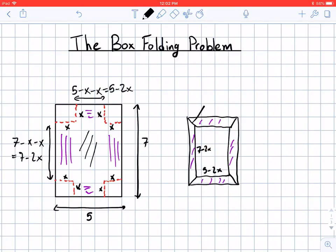Okay now how about the height? The height of that box is how much I fold it over by, which is exactly this distance which is X. So in total my volume is going to be the area of the base which is 7 minus 2X times 5 minus 2X times the height which is X.